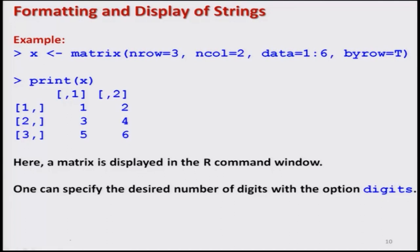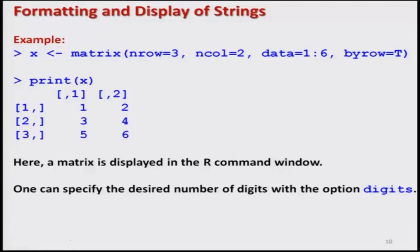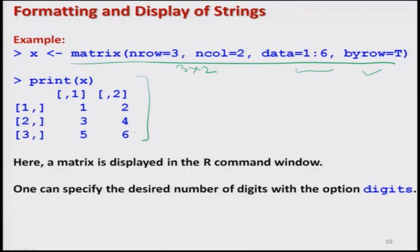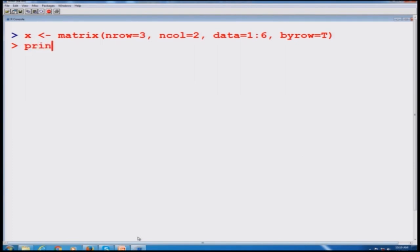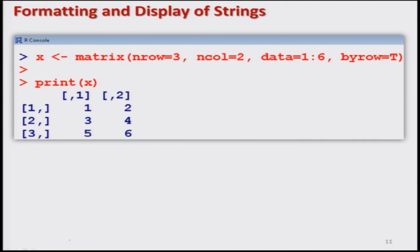Now let us take another example where I use the print command on a matrix class. As discussed, the print command can be used with any object class. I define a matrix x — a 3 by 2 matrix with 3 rows, 2 columns, data from 1 to 6 arranged row-wise. Using print(x) prints the matrix outcome. You can also specify the desired number of digits with the 'digits' option. Let us verify this prints correctly on the R console — and indeed it does, as shown in the screenshot.